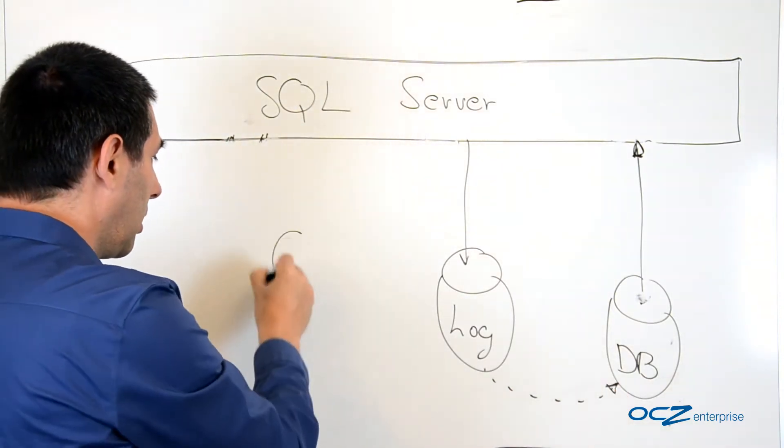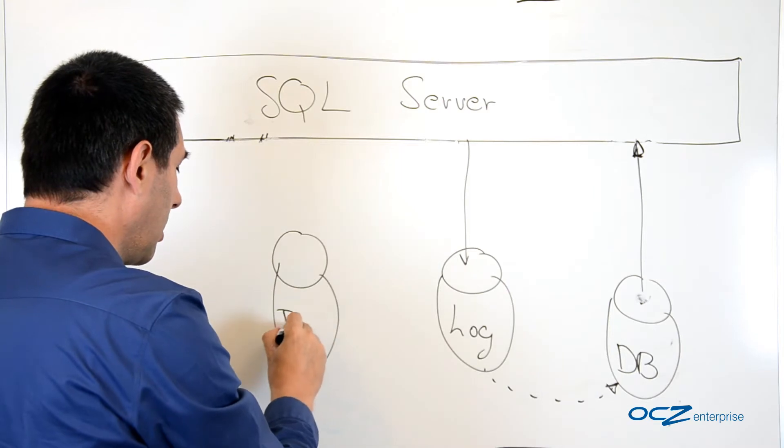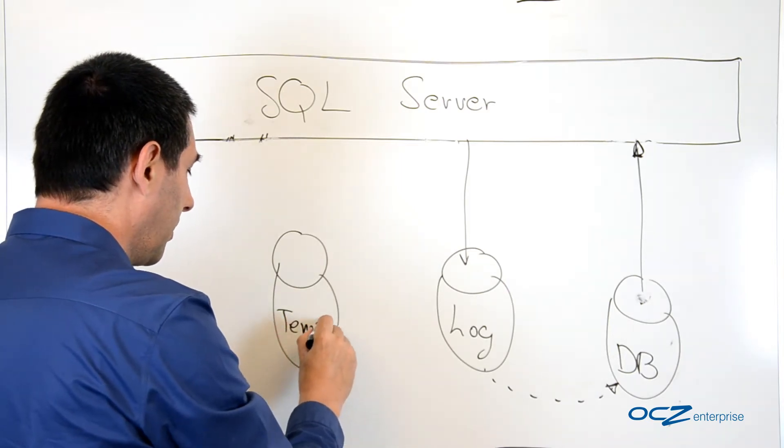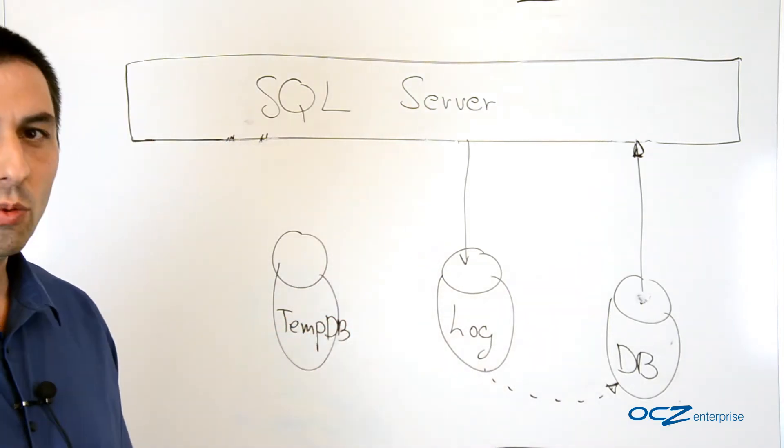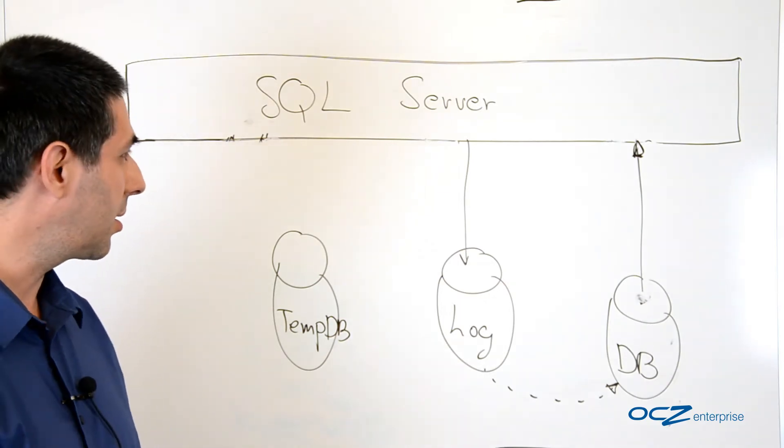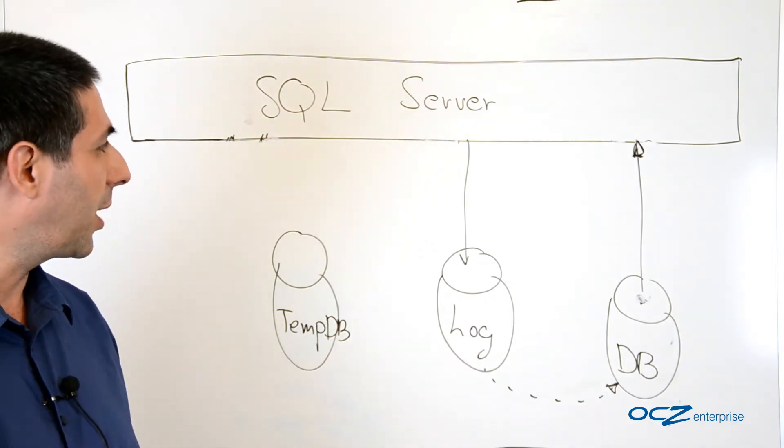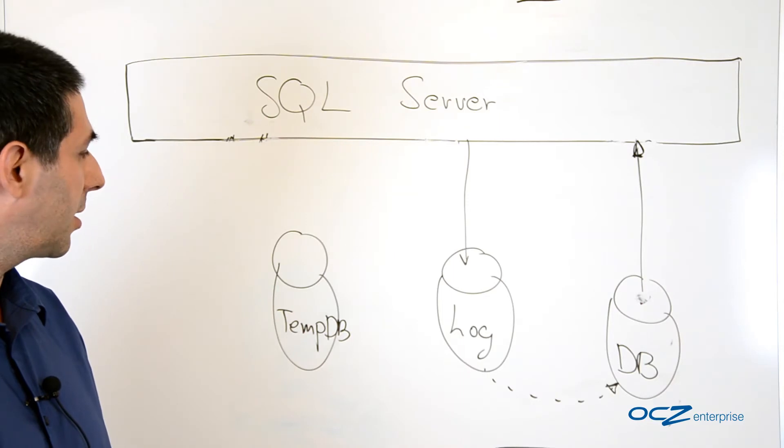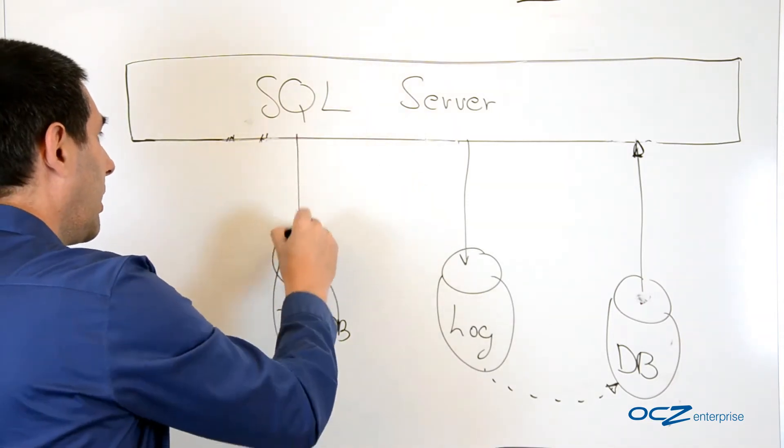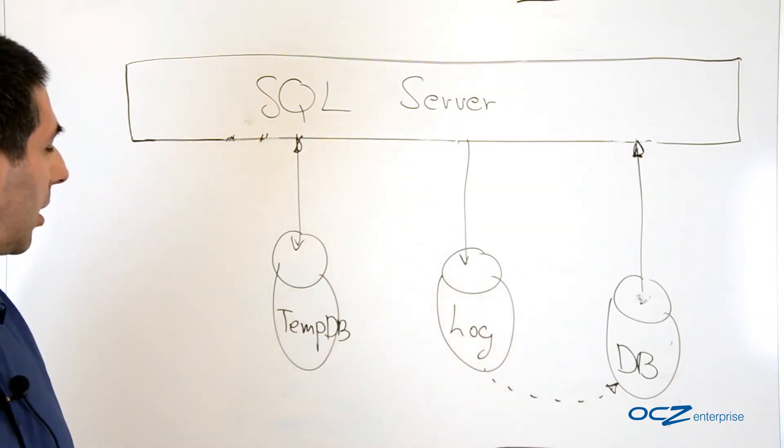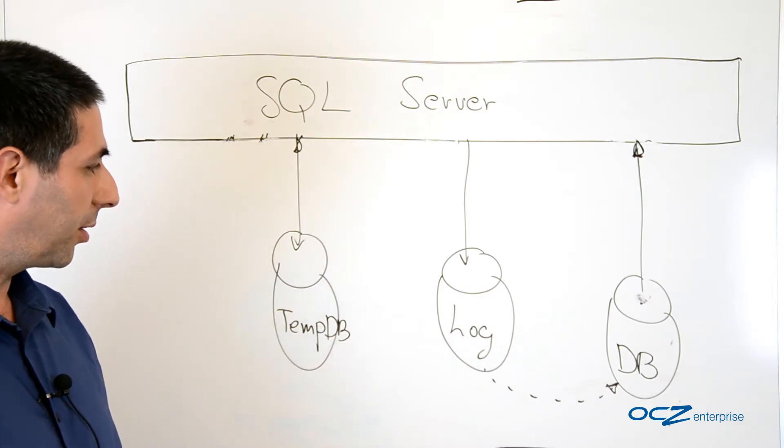The third one is a temporary space or the tempdb file, which is a kind of swap file that the SQL Server uses to store data that cannot be placed in the memory because of the memory size and so on. This data is read and written to the tempdb by the SQL Server.